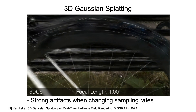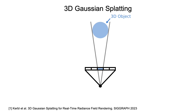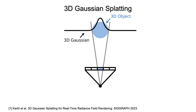To understand why this happens, let's first take a close look at how 3D Gaussians are rendered. Suppose we have a 3D object and the corresponding 2D images. We can represent the object with a 3D Gaussian, and then project the Gaussian to image space to form an image.